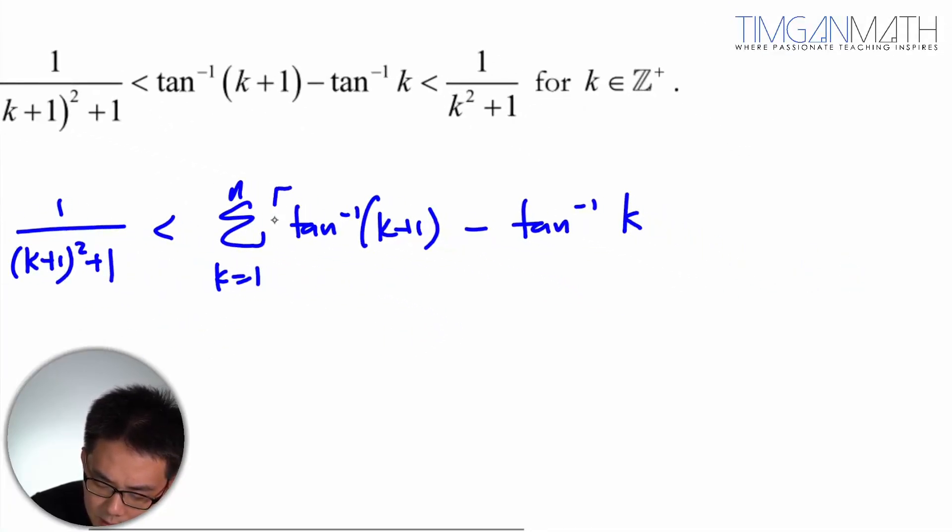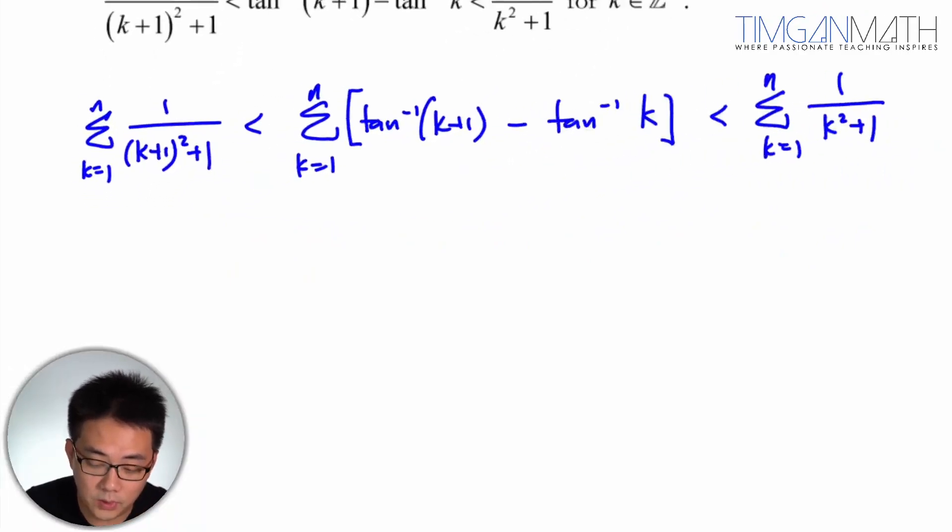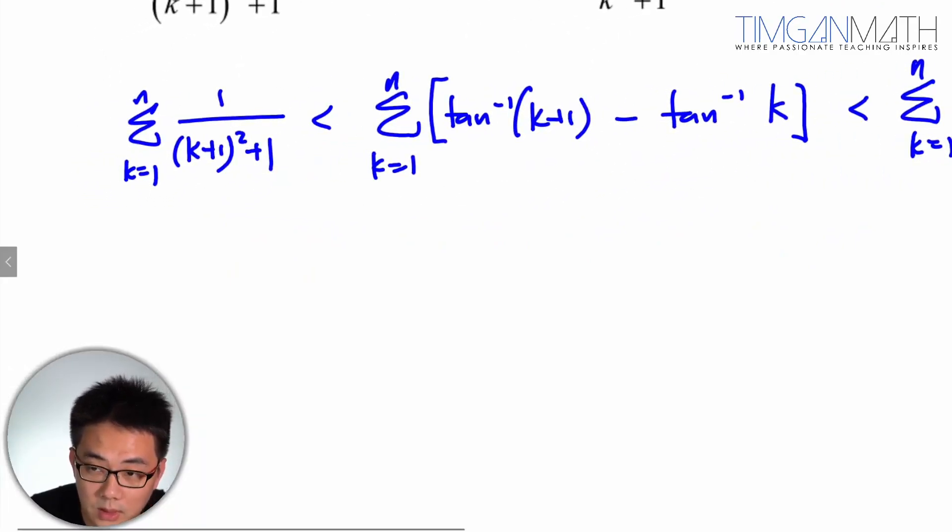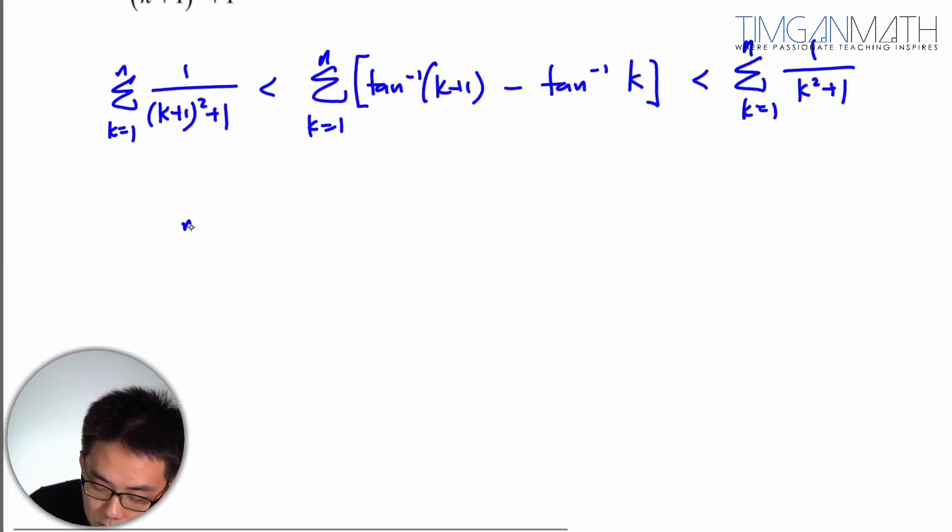And I'm just going to bracket this in the sigma notation and after which I'll just put it as k equals to one, k squared plus one. Alright, so this is done. Now once this is done, what we're going to do is actually this middle one, what we could do is a method of differences. So if you were to write this down, I think I'll just separate it out because it's easier to solve separately instead of putting in the inequality here.